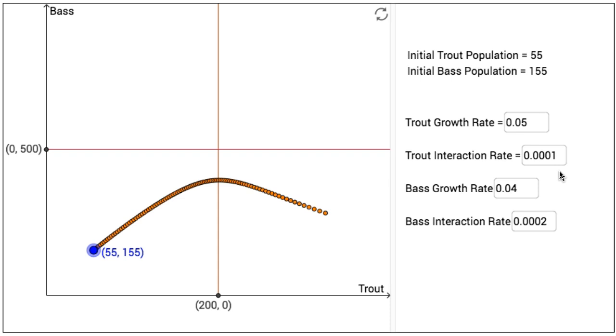So for each unit of time moving forwards, the trout population will increase by 5%, but it will decrease by 0.0001 times the product of the two populations at that time. And the bass population will increase by 4% in each time interval, but will also decrease by the product of the two populations times 0.0002.